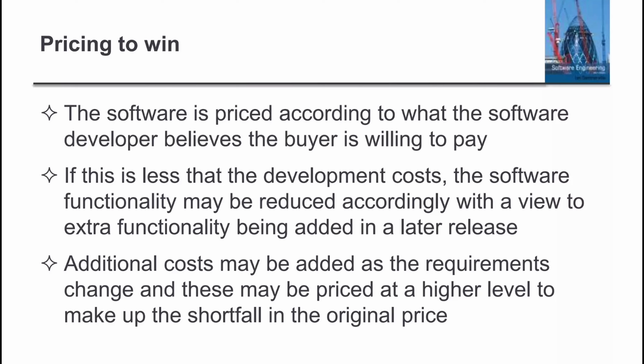Price to win: when we do a contract, we do a bit of analysis on how much price we can offer. We take the coding into account and can demand more price or demand less than our development costs. If this is less than the development costs, we have less demand, so software functionality may be reduced accordingly — with extra functionality being added in a later release. Then we will charge them for that.